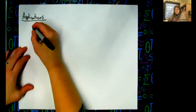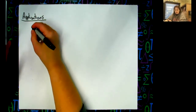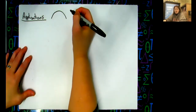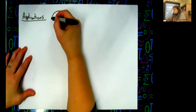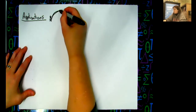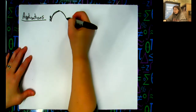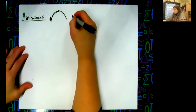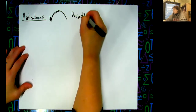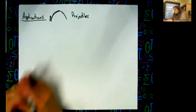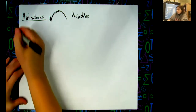Parabolas are often used to describe projectiles. Think about someone kicking a ball — it goes up, hits a peak, and comes back down. That's our parabola. Projectiles are very common applications, and there are other scenarios that lead to a quadratic, but we're going to focus on a projectile for this one.